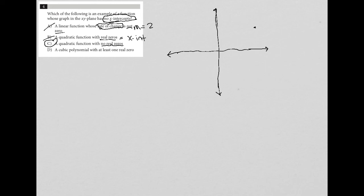And then choice D, of course, a cubic polynomial with at least one real zero just means that it crosses through the X axis once, which means it has one X intercept, but we're looking for a scenario where there are no X intercepts, which means there are no real zeros. Just reconfirming that choice C is the best answer here.